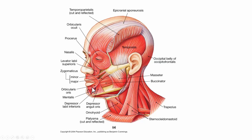We have the depressor labii inferioris, which pulls your lip down like you're pouting. Then we have the depressor anguli oris, which pulls the corners of your mouth down.